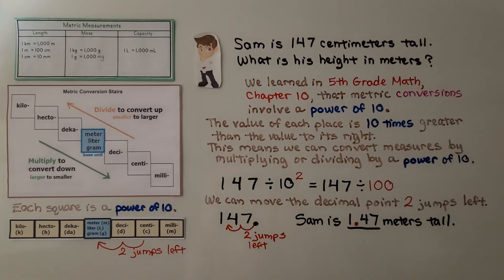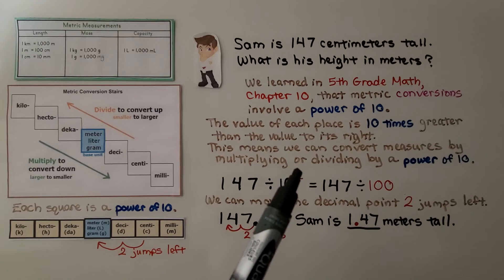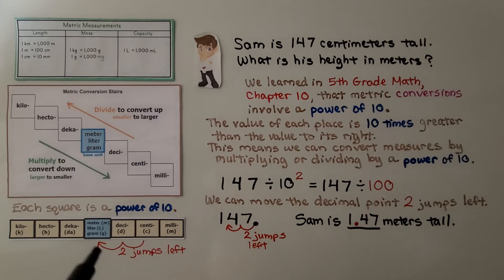We learned in 5th grade math, chapter 10, that metric conversions involve a power of 10. And the value of each place is 10 times greater than the value to its right. This means we can convert measures by multiplying or dividing by a power of 10. We have 147 divided by 10 to the second power. We're going from centimeters to meters. That's 1 power of 10, 2 powers of 10. That means we're going to have 2 jumps left with our decimal.